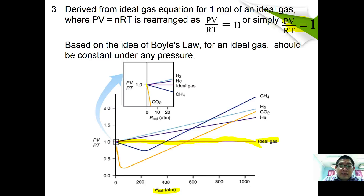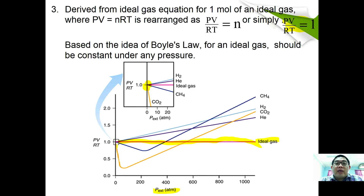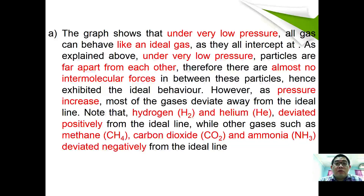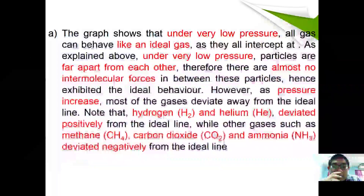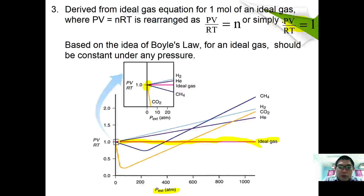At very low pressure, all gases converge at the ideal line of 1.0, indicating that all gases behave like an ideal gas at very low pressure. Under very low pressure, particles are far apart, so there are no intermolecular forces between them and they exhibit ideal behavior.